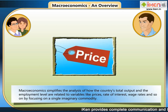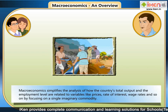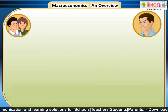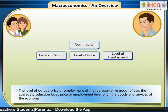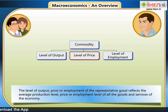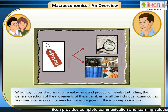This simplification is done by focusing on a single imaginary commodity. We think of the level of output, price, and employment of this imaginary commodity as representative of all the goods and services produced within the economy. The level of output, price, or employment of this representative good reflects the average production level, price, or employment level of all the goods and services of the economy.